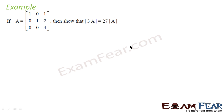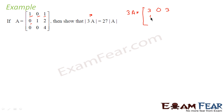Let's take one more similar example — exactly the same, except instead of a 2×2 it is a 3×3 matrix. Here we have to prove that determinant of 3A is 27 into determinant of A. To find 3A, multiply all elements of A by 3: giving the matrix [3, 0, 3; 0, 3, 6; 0, 0, 12].